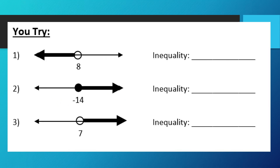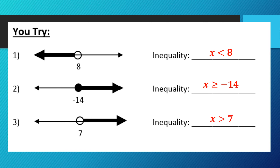See if you can try to write the inequalities for these three graphs. Go ahead and pause the video and try to write the inequalities on your notes page, then unpause when you're ready to see the answers. On number 1: open circle at 8 shaded to the left — x is less than 8. On number 2: closed circle at negative 14 shaded to the right — x is greater than or equal to negative 14. On number 3: open circle at 7 shaded to the right — x is greater than 7.